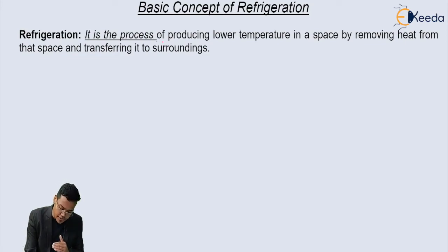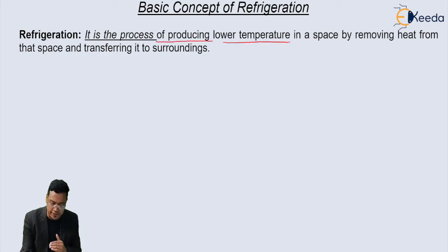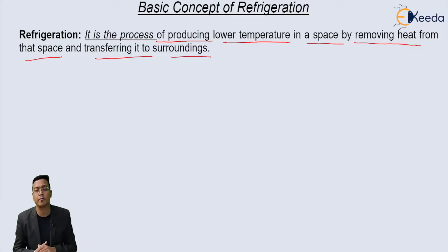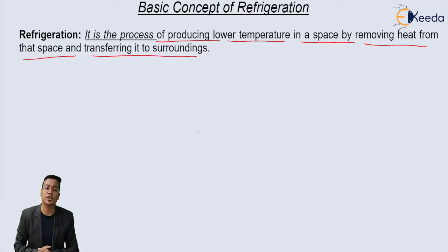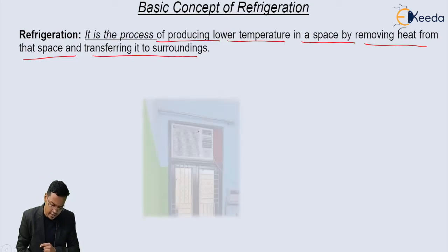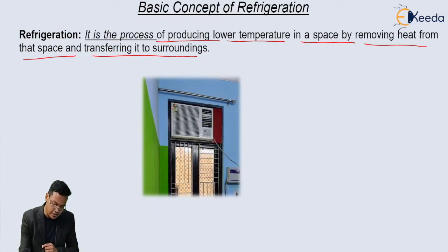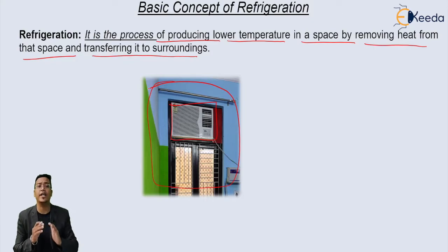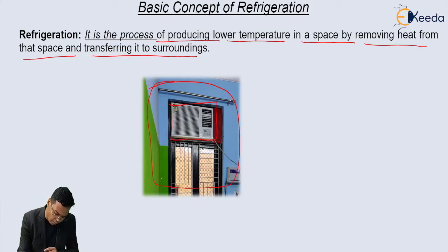Refrigeration is the process of producing lower temperature in a space by removing heat from that space and transferring it to the surrounding. I'll explain the process of refrigeration with the help of an example of a window AC. In this picture, this is my window AC and this is the room.